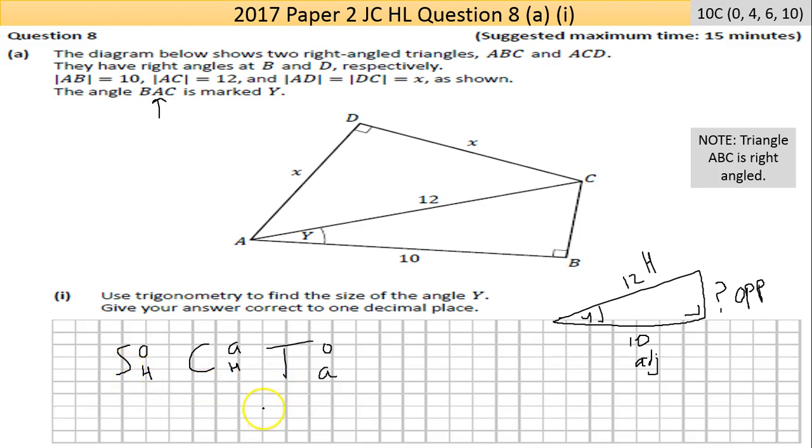So sine of some angle equals the fraction made by the opposite divided by the hypotenuse. It's the opposite we don't have - we do have the hypotenuse but that's only one of three things, so sine won't work. You need to have two of the three things for the formula to work.